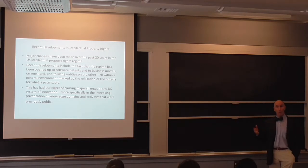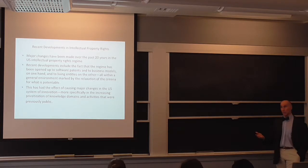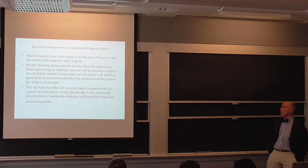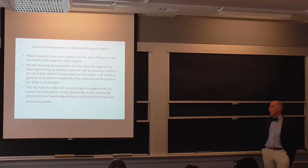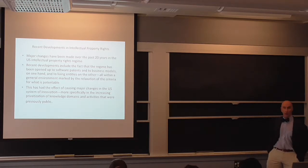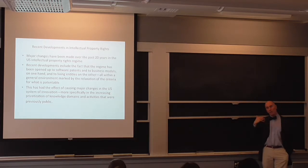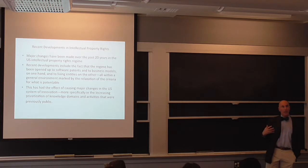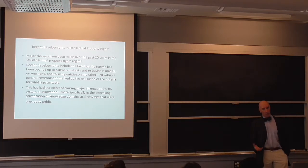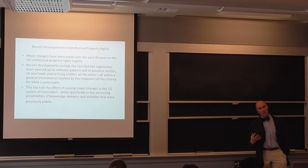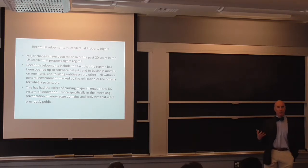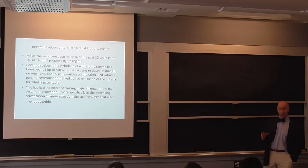There's been a liberalization of what is patentable, what is protectable under intellectual property rights. Some of the recent developments include the fact that the regime has been opened up to software patents and to business models, and as we talked about in some of the cases we covered, to living organisms, all within a general environment marked by the relaxation of the criteria for what is patentable. And why is the criteria for what is patentable relaxing? Because the technology is advancing so quickly. It's hard for the law to react and to change and to adapt.